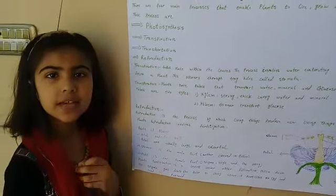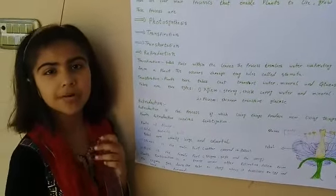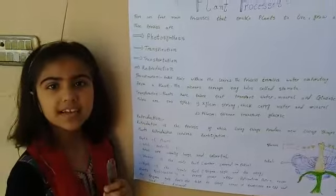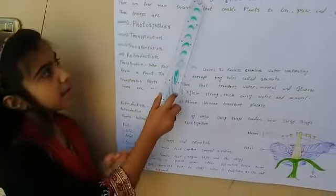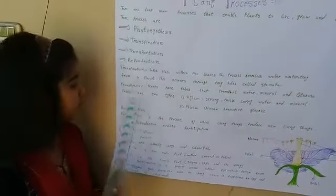Welcome, my name is Ayesha Fatma. I am from grade 4. My school name is Thinker's Alliance. Today my topic is Plant Processes.